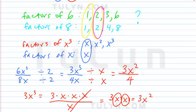So when we reduce our fraction, it will be 3x squared divided by 4. Or also, you can say 3 fourths x squared. Okay.